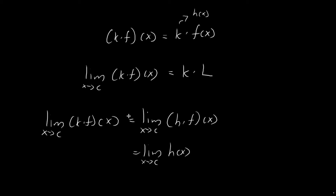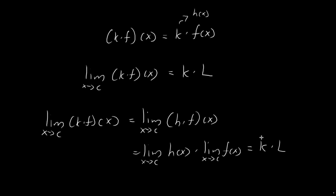Using the product rule, I can break this apart: it equals the limit of h of x as x tends towards c, times the limit as x tends towards c of f of x. Since h of x always equals a constant, that first limit is just equal to k. I haven't formally proved that the limit of a constant function equals the constant itself, but you can use an epsilon-delta definition — it's rather trivial. And the second limit equals l by definition. So we have established the constant multiple law: the result is k times l.